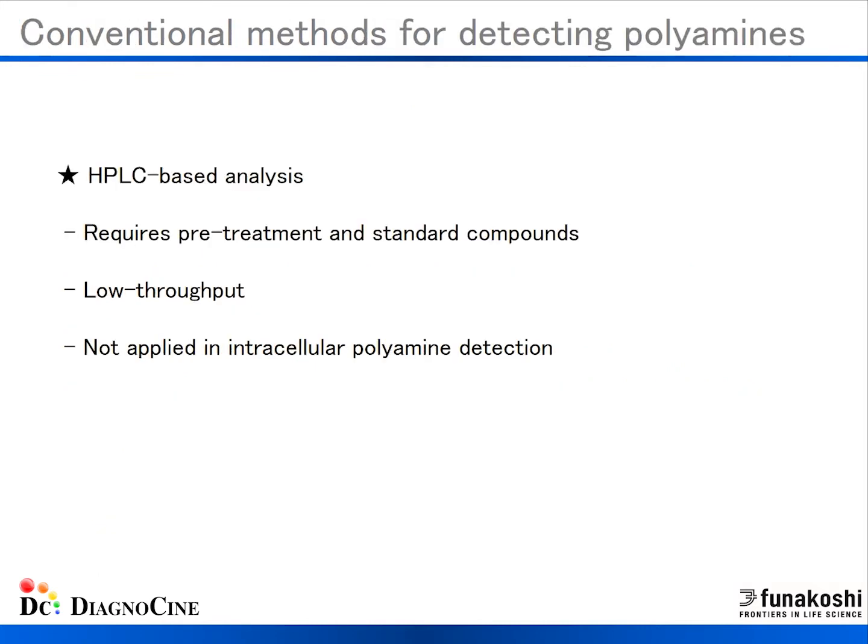Conventional methods for detecting polyamines are HPLC-based analysis. However, HPLC has some issues such as pretreatment, standards must be provided, low throughput, and it cannot be applied to intracellular polyamine detection. So a cell-based assay with easy and high-throughput procedures is desirable to investigate further biological functions of polyamines in cells.